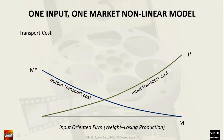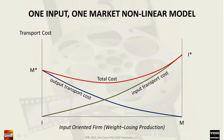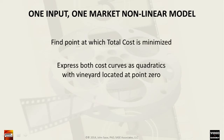As in our linear example, we add the input and output transport cost functions together. We can determine the total cost of transporting fresh grapes and wine bottles from any point of production to the market. In this non-linear case, we determine the optimal production location by finding the point at which total shipping cost is minimized.